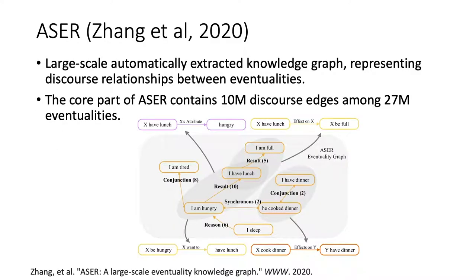We then introduce Acer, a large-scale automatically extracted knowledge graph representing discourse relationships between eventualities. For example, 'I am hungry' results in 'I have lunch,' and 'I have lunch' results in 'I am full.' We adopt the core part of Acer, which contains 10 million edges among 27 million eventualities.